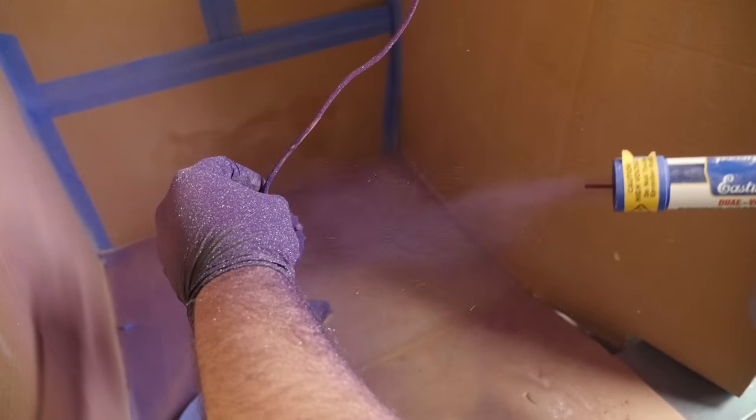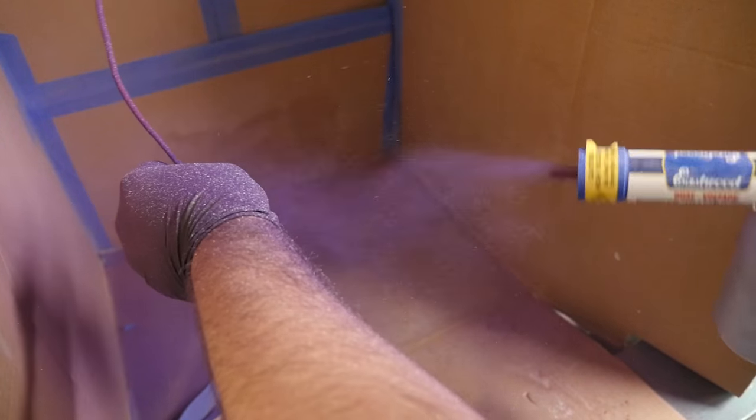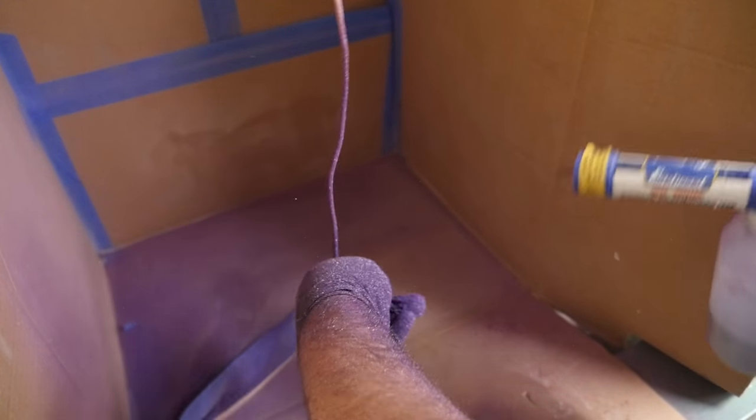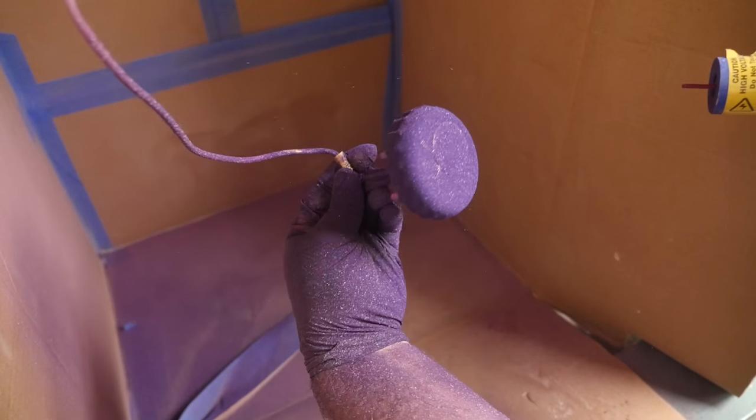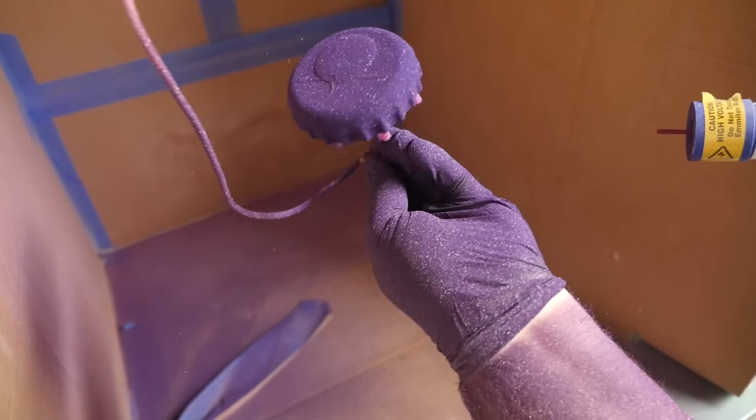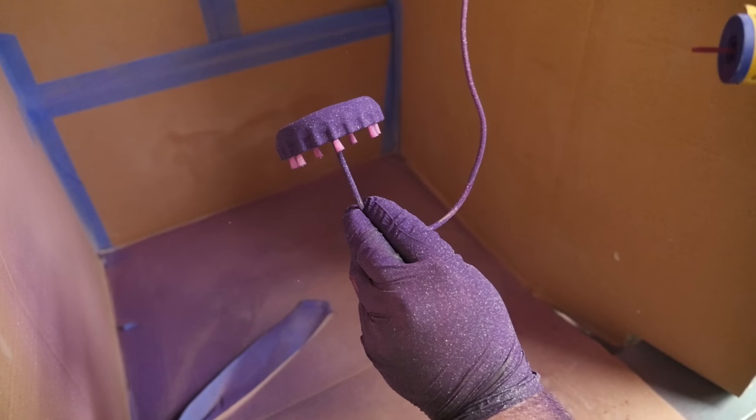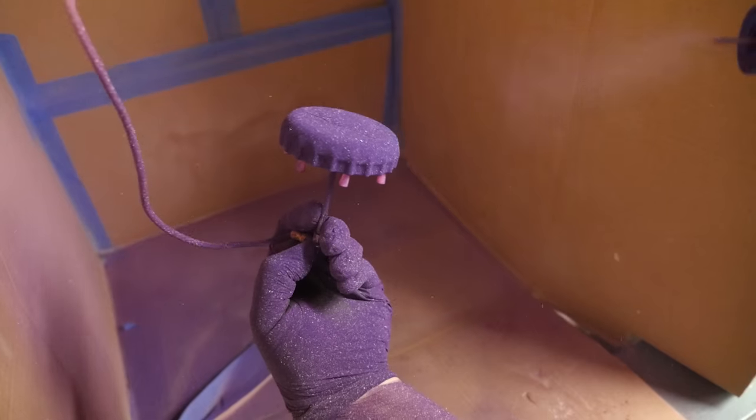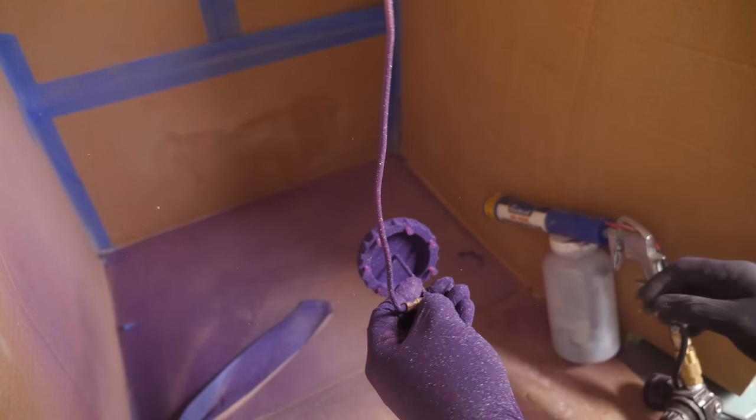Getting the inside slash bottom of this bottle cap to get some paint on it is pretty tricky. I guess the shape of it forms a little bit of a Faraday cage, and that prevents the electrically charged particles from entering that part of the bottle cap.